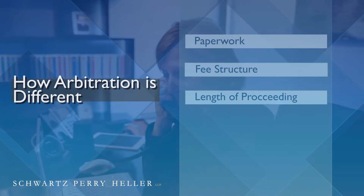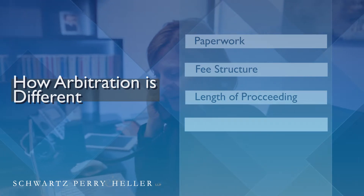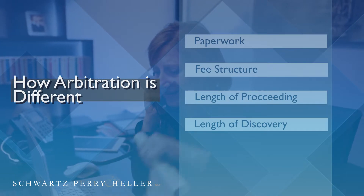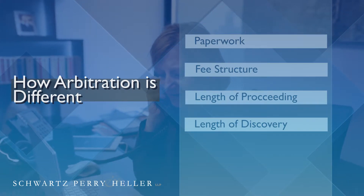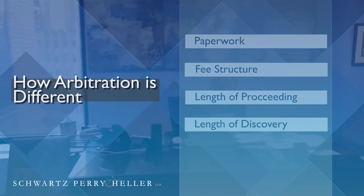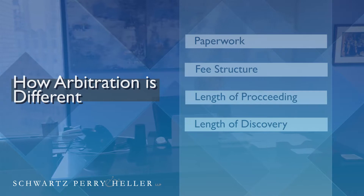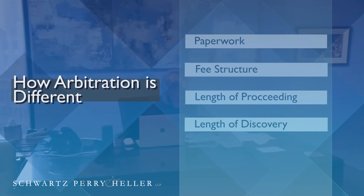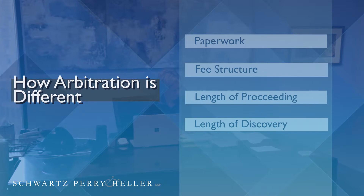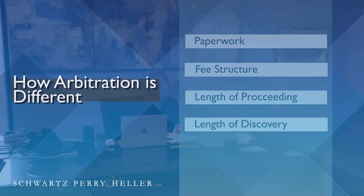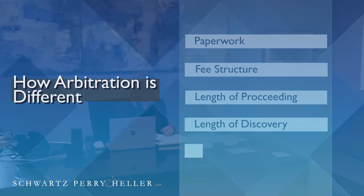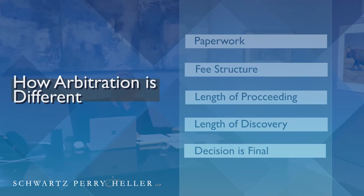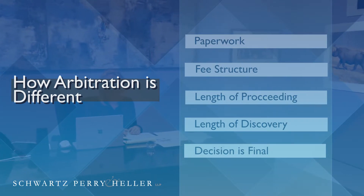The discovery involved in arbitration is sometimes more limited than what you'd experience in court. When I refer to discovery, I'm referring to the exchange of documents and the number of depositions that can be taken. Another difference is that the result in arbitration is final — you can't appeal it — but in court, the losing party would be able to file an appeal.